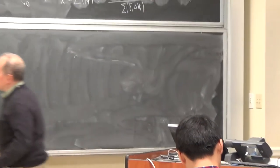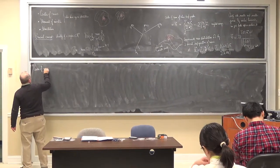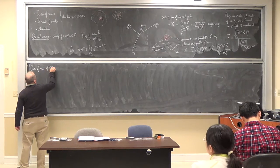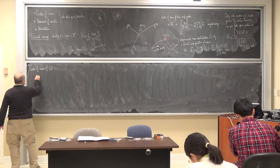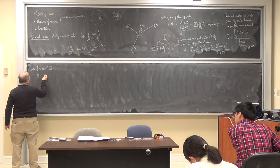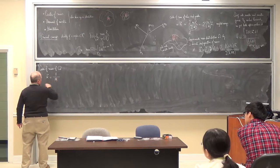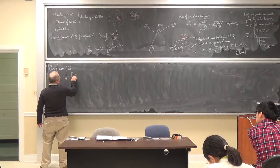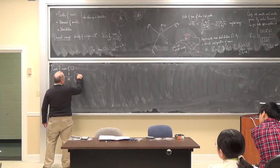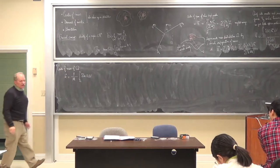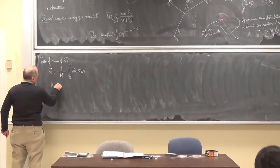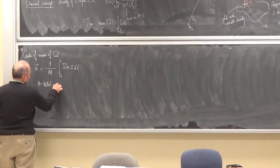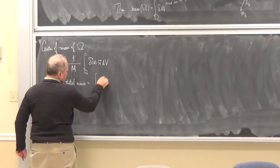We're adding up density times the position vector and multiplying by the chunk of volume, so we're integrating a vector function, weighting the position vector by the density at the point. It's a weighted average in the sense of an integral. Remember, we talked about average value of a function by integrating the function and dividing by the volume — now we're going to weight by the density, so we're going to divide by the total mass. So the center of mass of omega is given by 1 over the mass times the integral of density times position vector dV, where the total mass is the integral of the density.